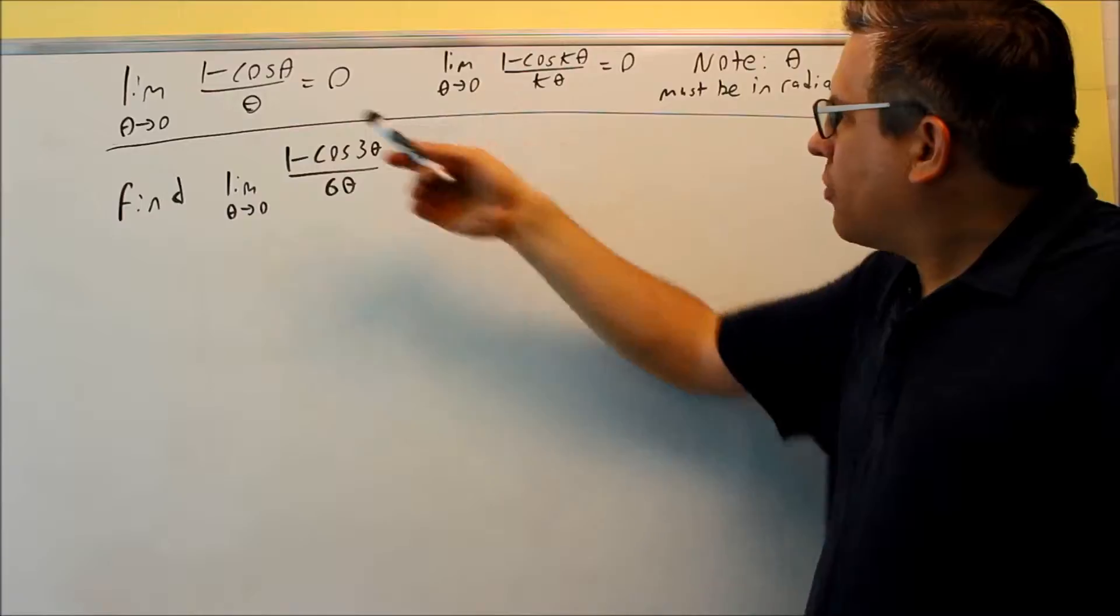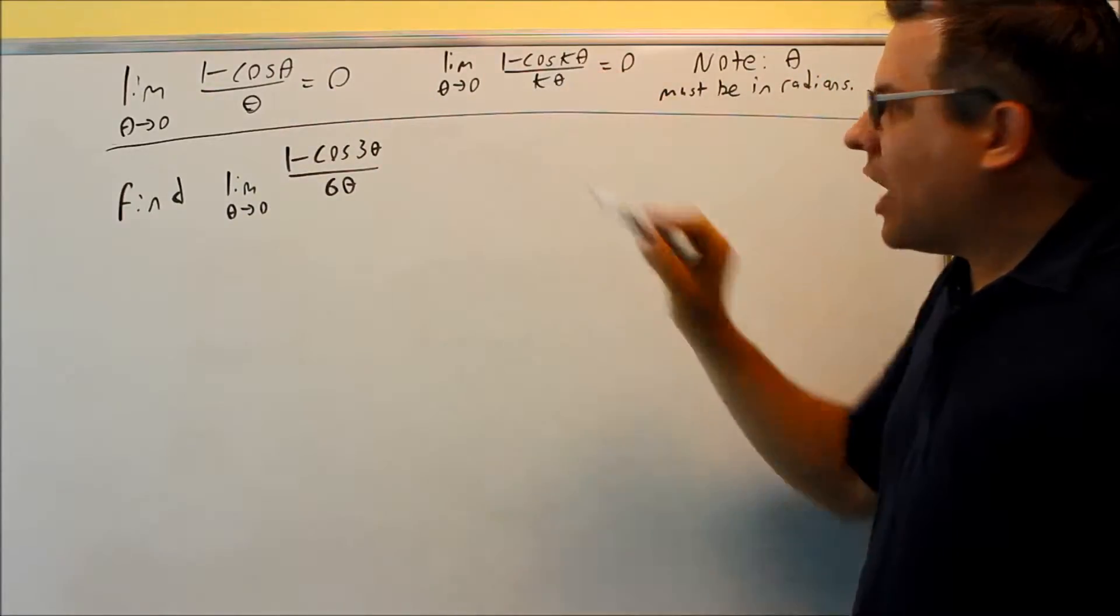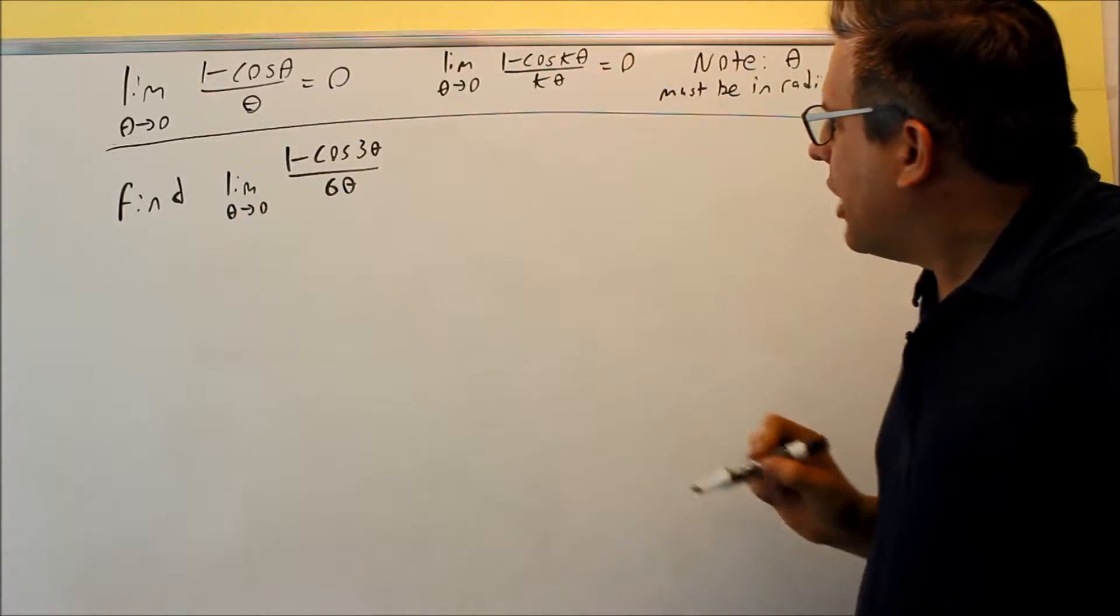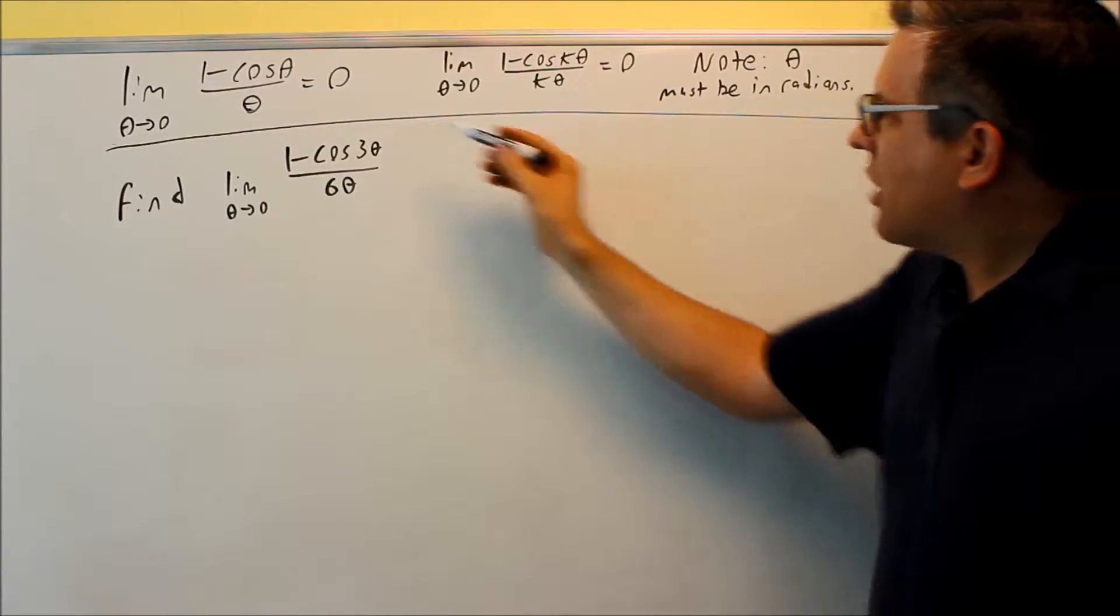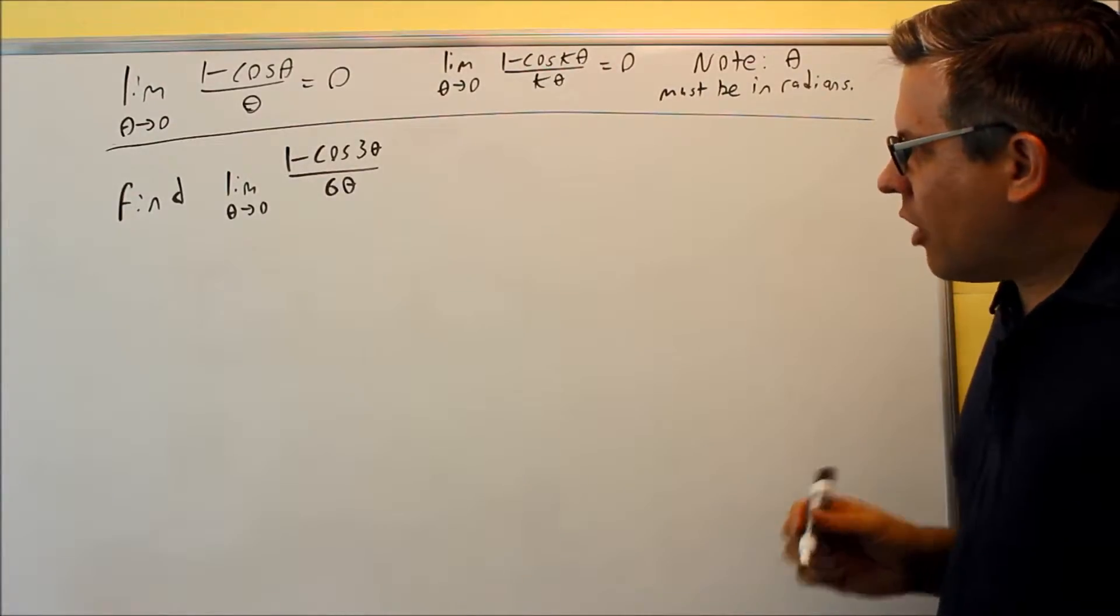And like I mentioned before with the sine, there's other types of properties you can apply to this one. For instance, as long as these two k values are the same, top and bottom, that would get you the same thing. You would still get zero, or if you have squares in top and bottom, that works the same way as well.